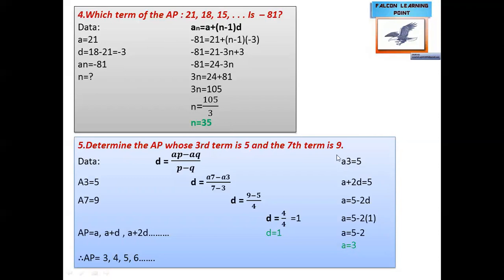The last question: determine the AP whose third term is 5 and seventh term is 9. We need to find the series. The third term and seventh term are given, and we use the formula for AP: d = (a_p minus a_k) divided by (p minus k). So d = (a7 minus a3) divided by (7 minus 3) = (9 minus 5) divided by 4.